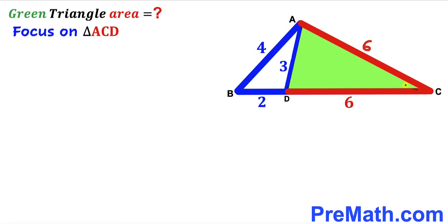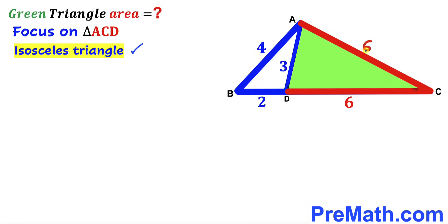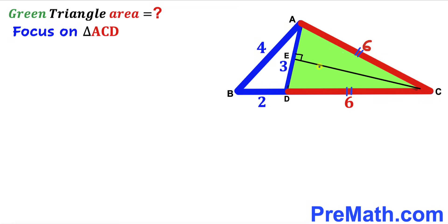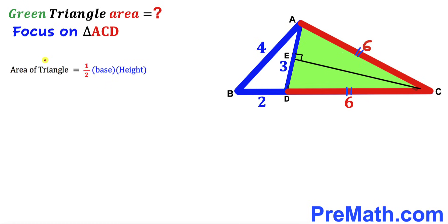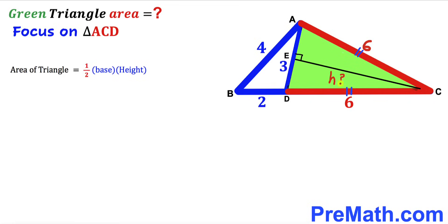Now we focus on the green shaded triangle ACD. It is an isosceles triangle since AC is 6 and CD is 6. I've dropped a perpendicular CE onto side AD. To find the area, we recall that area equals one-half times base times height. The base of this green triangle is 3 units and CE is the height, which I'll label lowercase h.